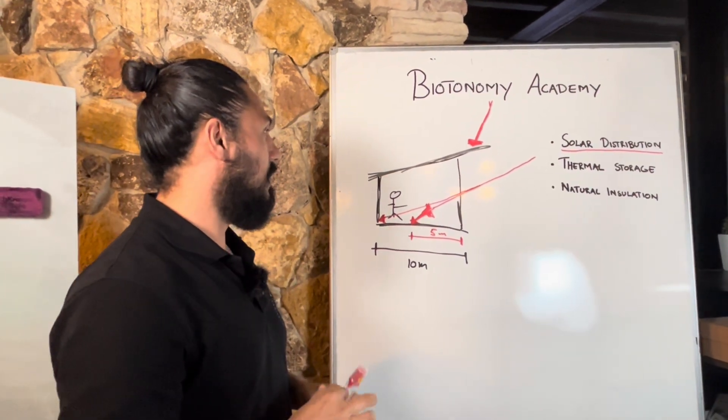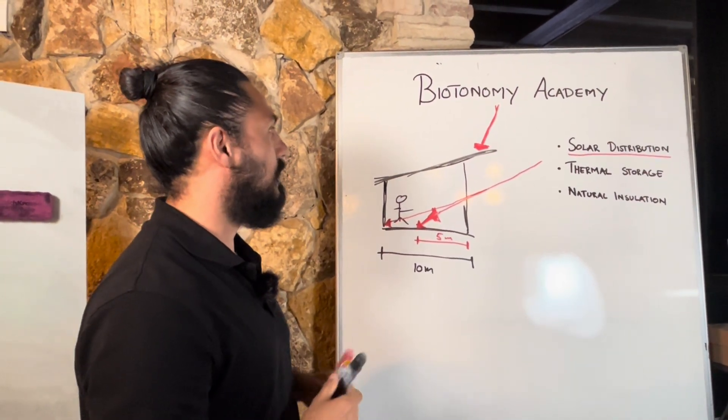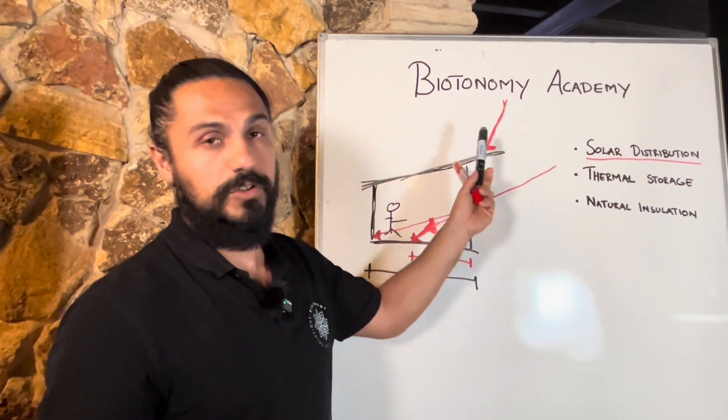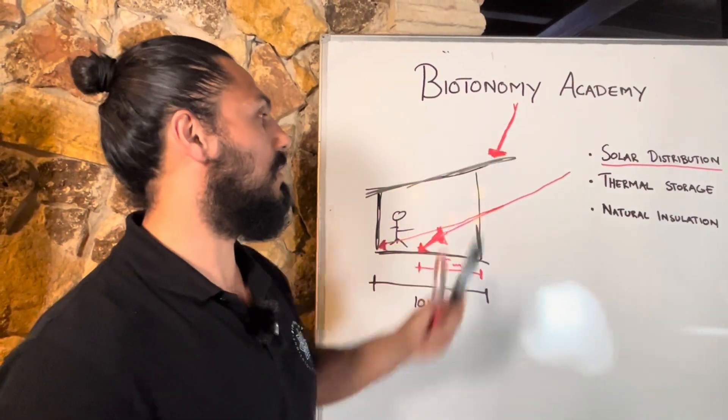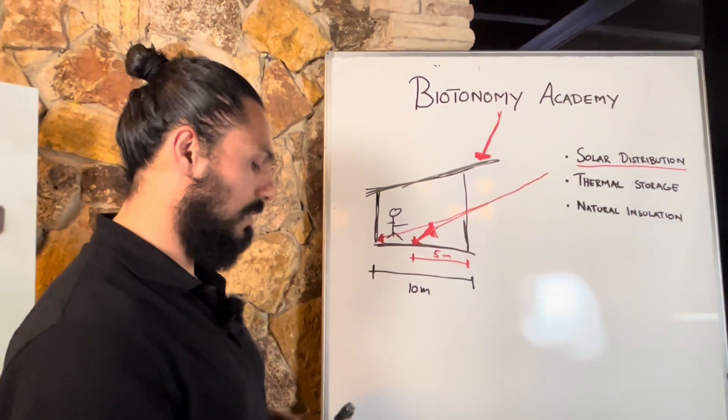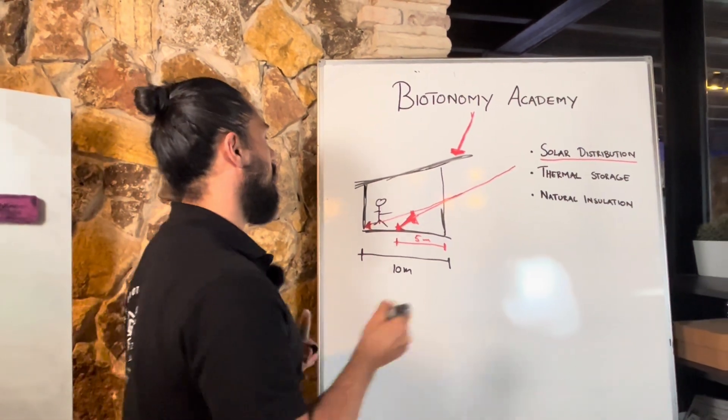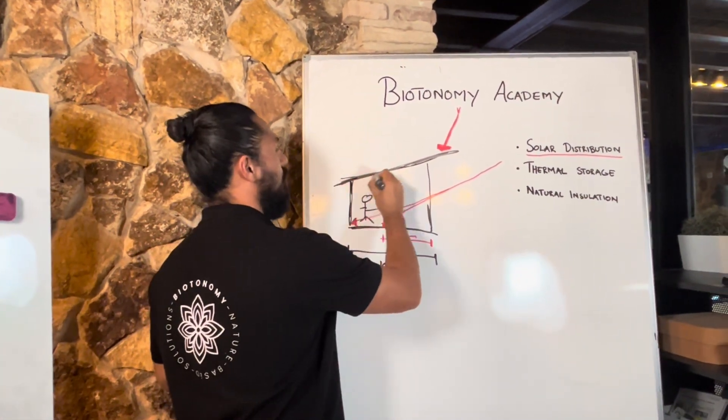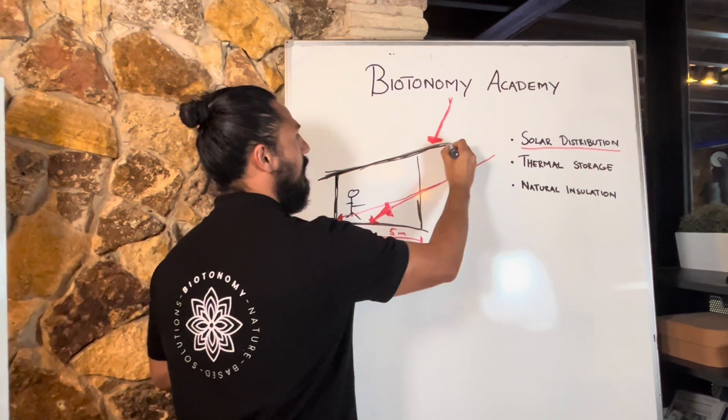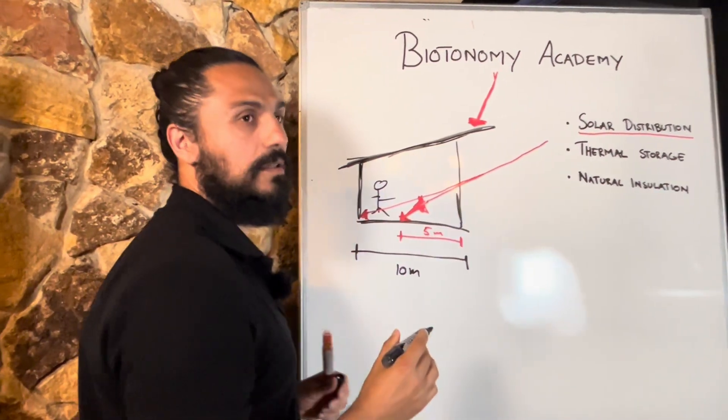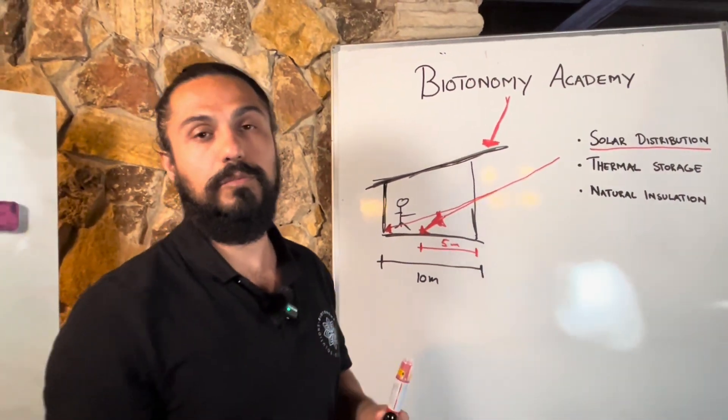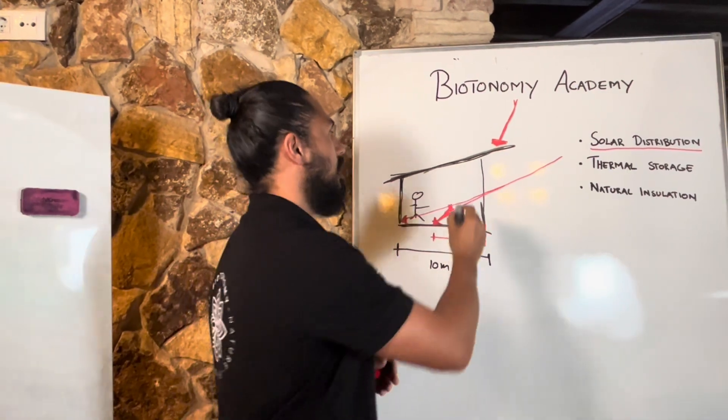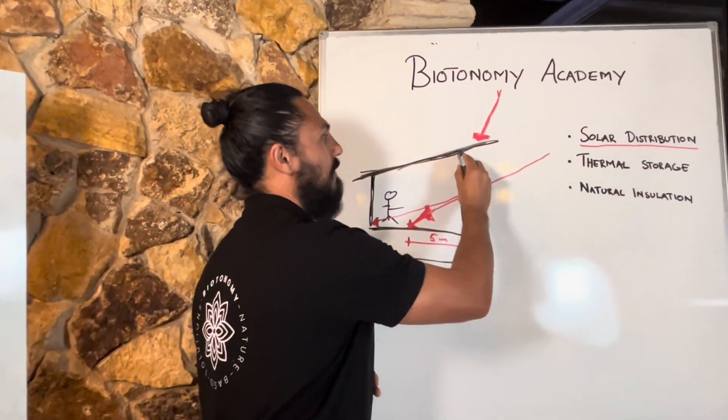But before I do that as well, you need to have the summer sun in mind. So in summer when the sun is really hot it's very important that you design your roof of your building in a way that you're actually blocking the sun to enter your building. So in this sketch you can see I have an overhang.